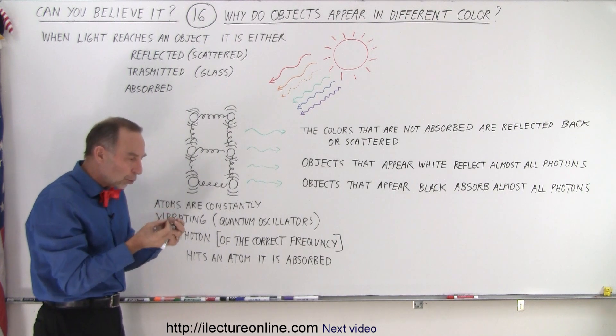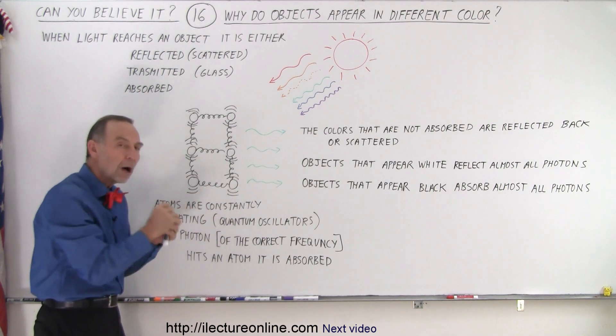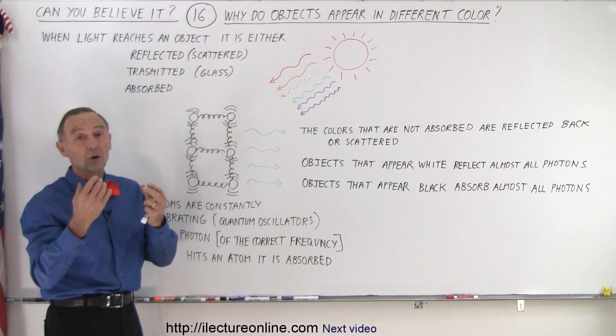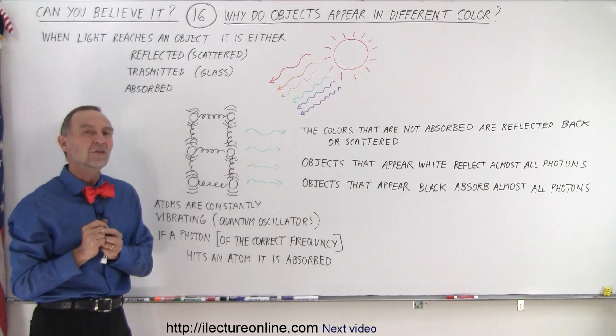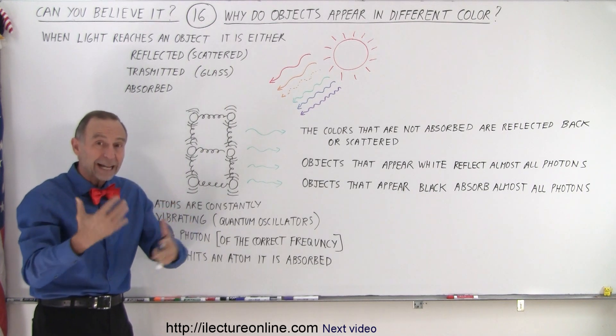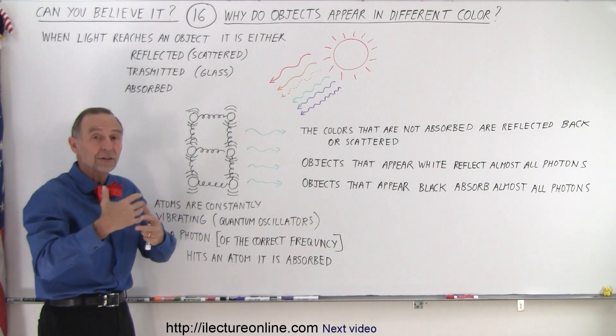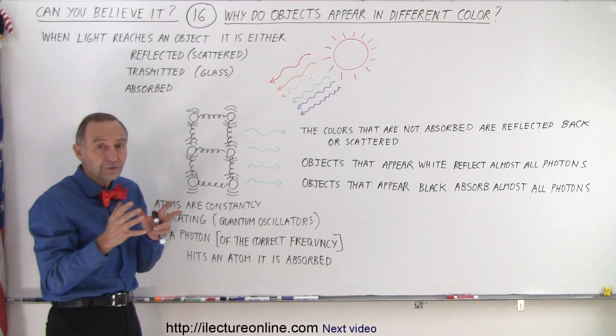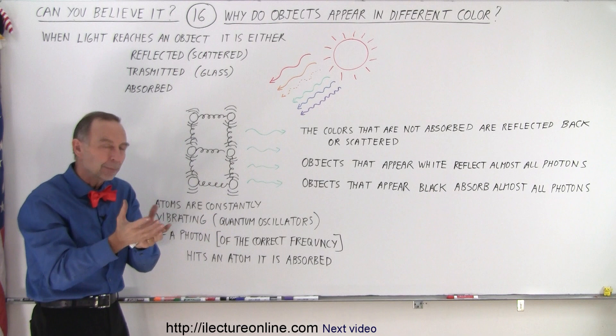And so, those become what we call quantum oscillators. And those vibrating atoms can only absorb particular frequencies. In a particular material, we could have lots of different kinds of atoms, and so together they can absorb a lot of different colors or only a few different colors depending upon the makeup of the material.